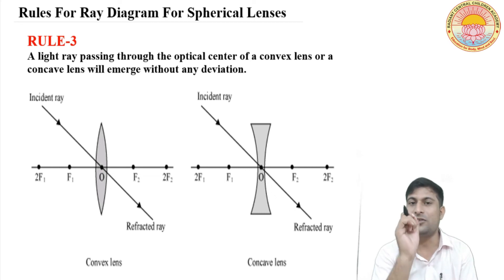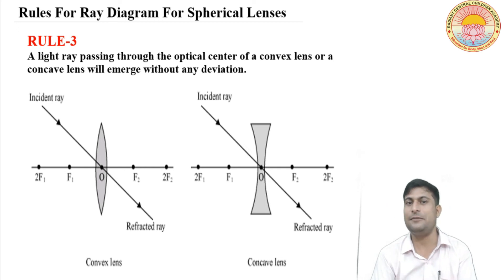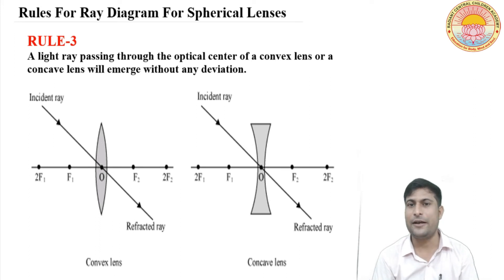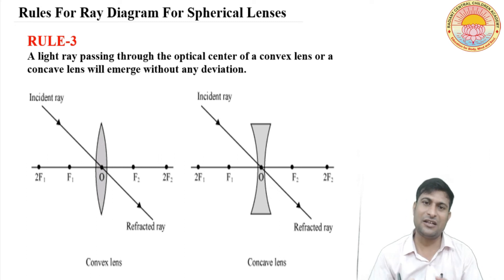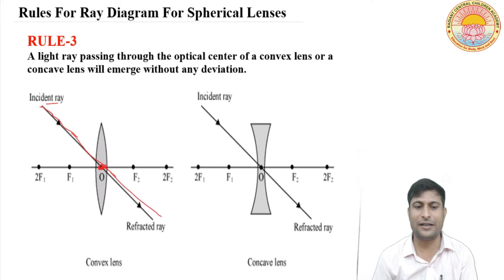Why is this? Because the optical center is the point of the spherical lens whose optical density is very less. So because the optical density is very less, the incident light passing through the optical center of the convex lens will pass without any deviation.